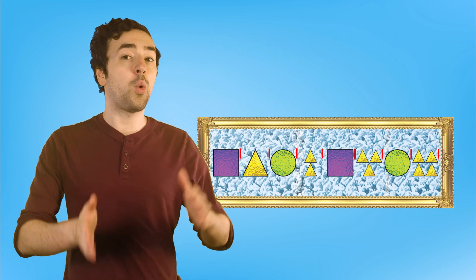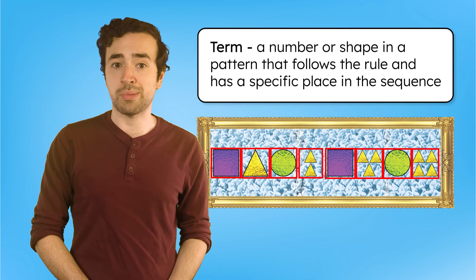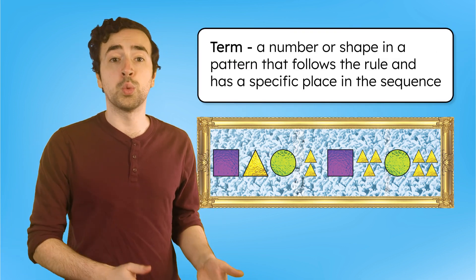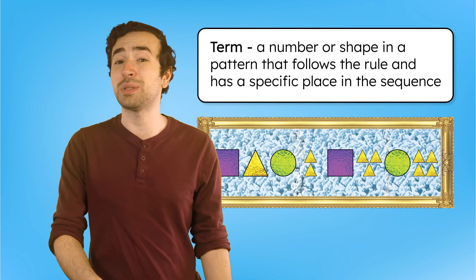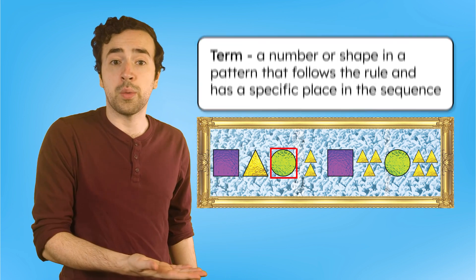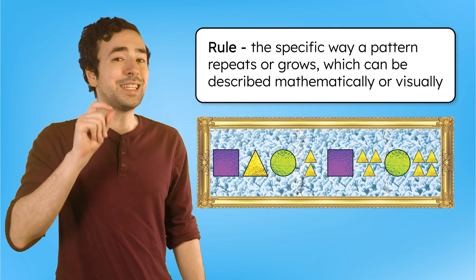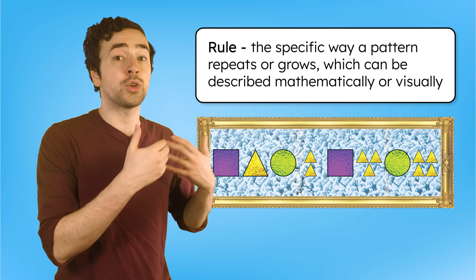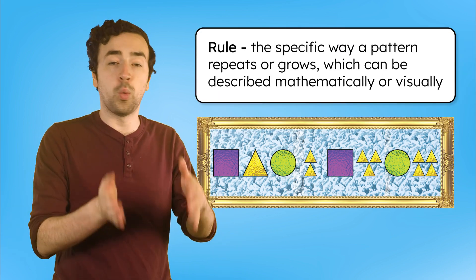Each number or shape in the pattern is called a term. A term follows the rule of the pattern and has a specific place in the sequence, like first, second, third, and so on. The rule is the specific way the pattern repeats or grows. It tells us what to do from one term to the next.